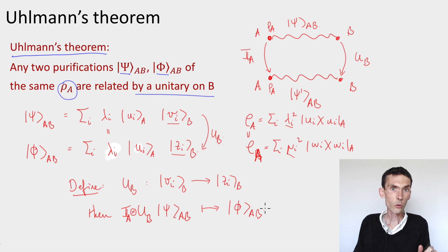So not only does Uhlmann's theorem say that this unitary on B only should exist when the states have the same reduced density, it also gives us a prescription for finding what the unitary matrix is. We simply have to write the Schmidt decompositions of ψ and φ.